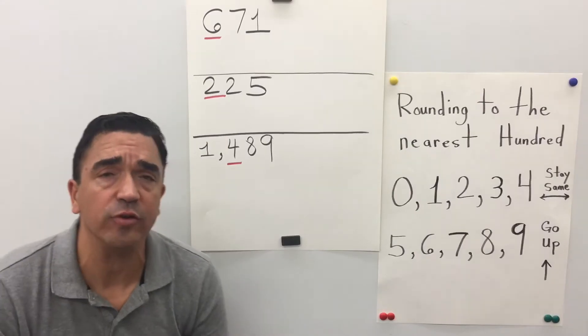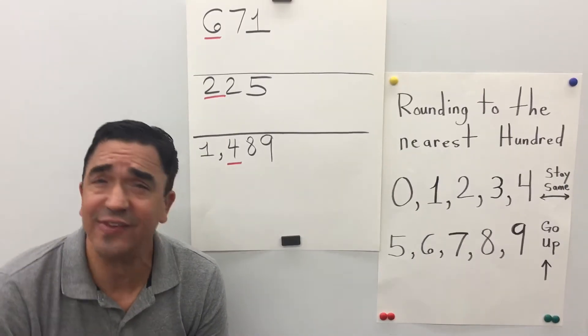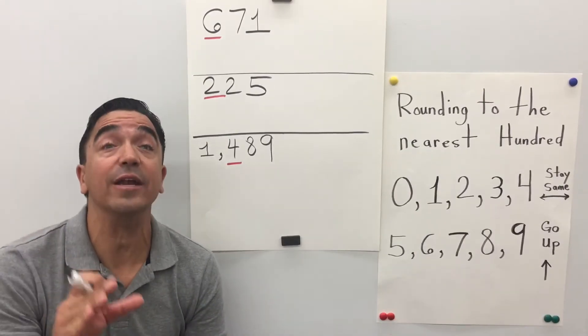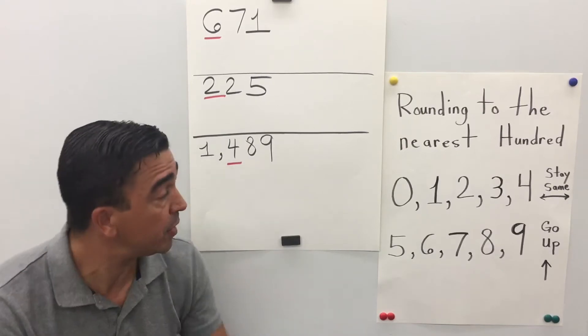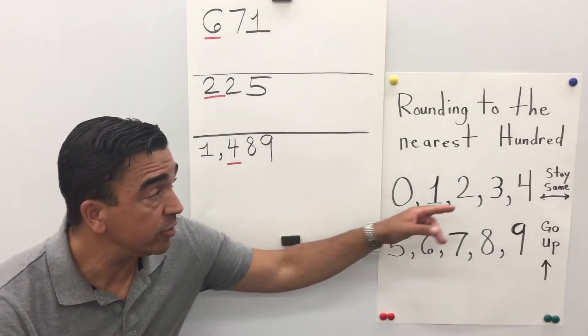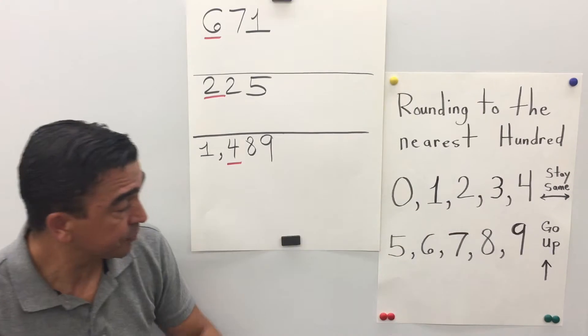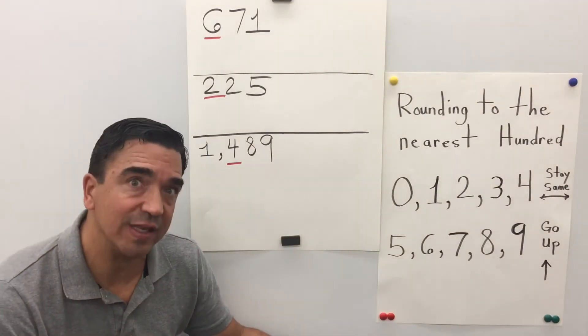Quick reminder: a digit is any symbol used to write whole numbers. For example: 0, 1, 2, 3, 4, 5, 6, 7, 8, 9.